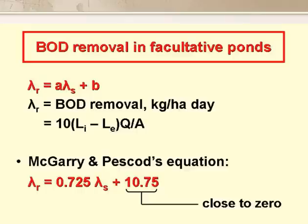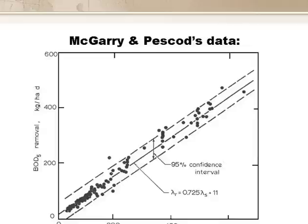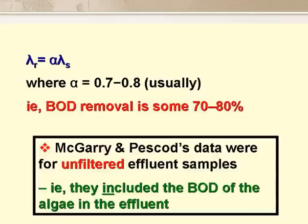McGarry–Pescod also looked at BOD removal in facultative ponds, and they found that BOD removal expressed in kg per hectare per day was a linear function of the BOD loading rate. Their equation is λr = 0.725λs + 10.75, and it is worth noting that the constant 10.75 is in fact close to zero. The plot shows a very good linear relationship. We now usually obtain a relationship of the form λr = aλs, where a is somewhere between 0.7 and 0.8 — that is to say, BOD removal is around 70 to 80%.